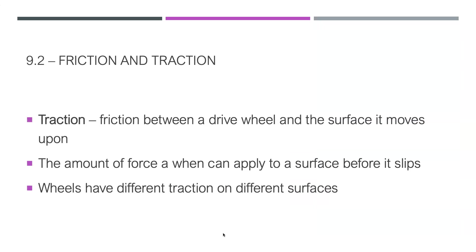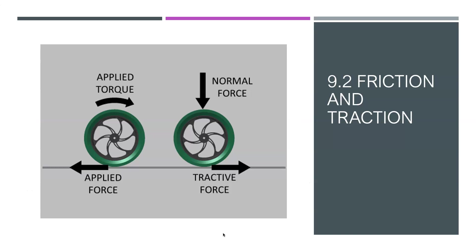The next thing is traction — specifically the friction between a drive wheel and the surface it is actually moving on. Traction is wheel-specific. For us, the surface we've been driving on may seem not very grippy, but it's actually more grippy than most we can drive on. Driving on carpet is a very different interaction than on the actual field — different traction, different surfaces. Think of the difference between ice and concrete.